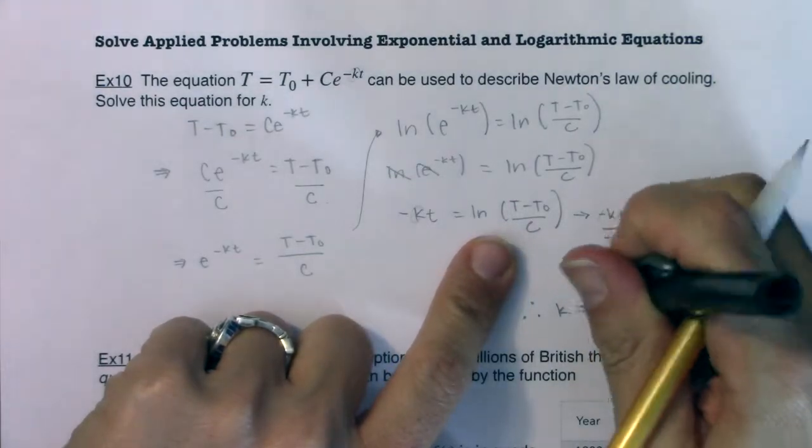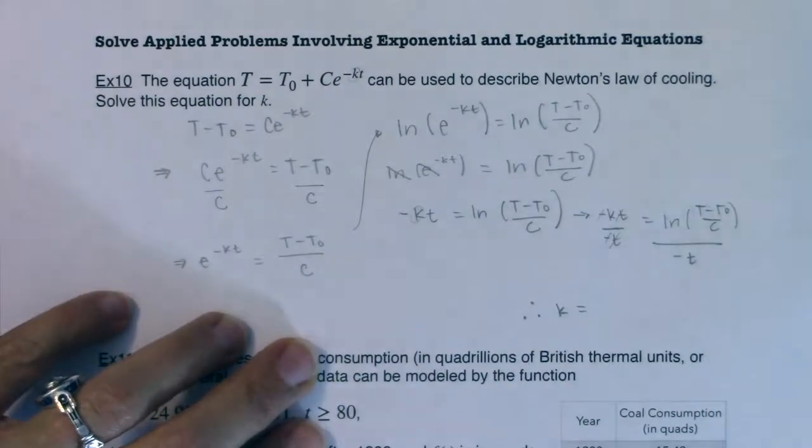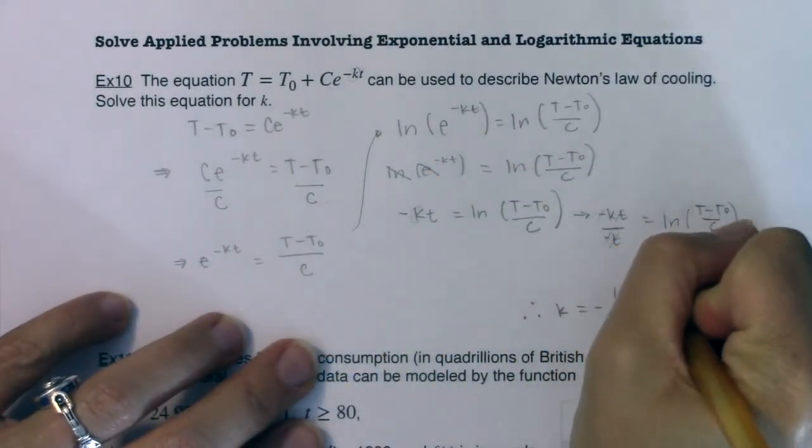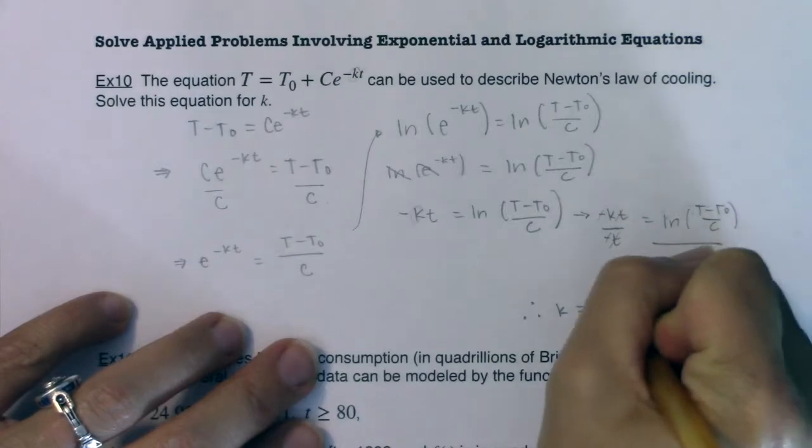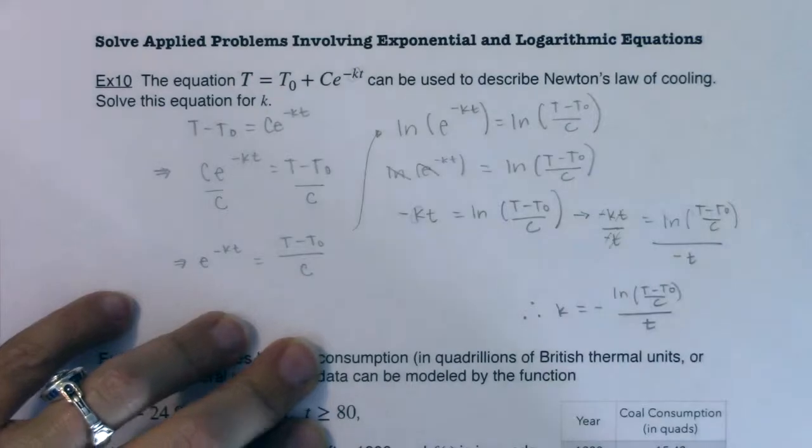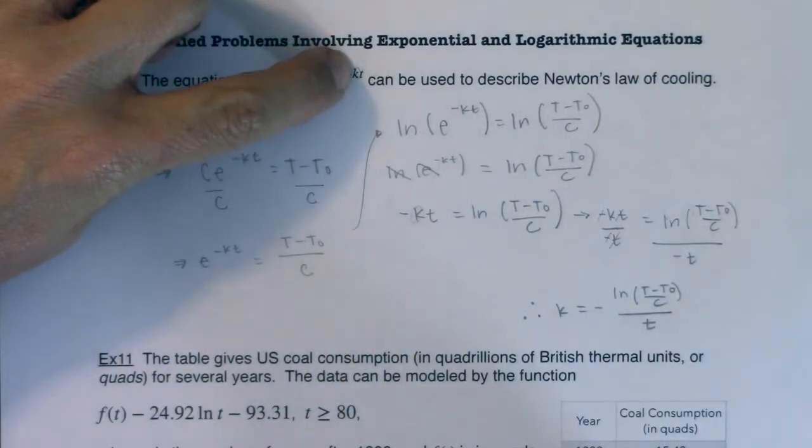And I want to stay consistent with that here. So then I have negative and we'll go ln of T minus T sub 0 over C and then in the denominator T.